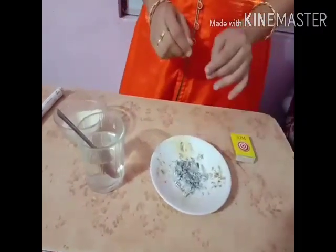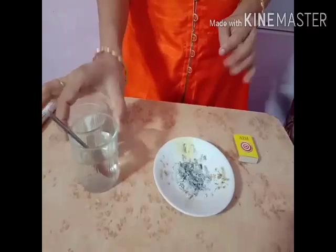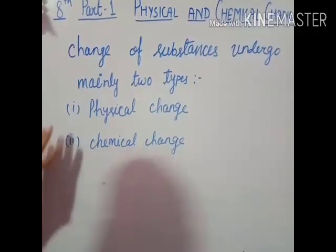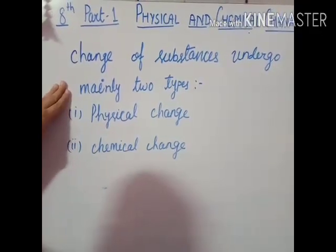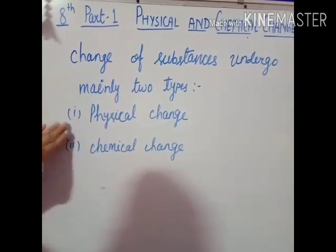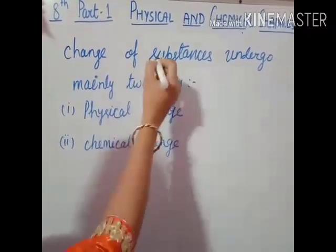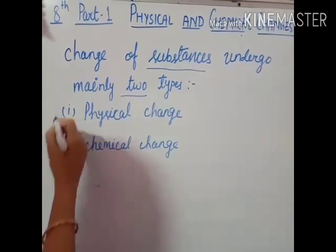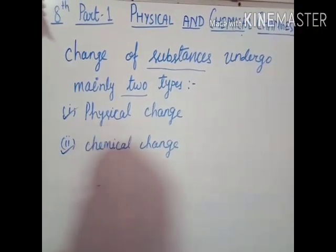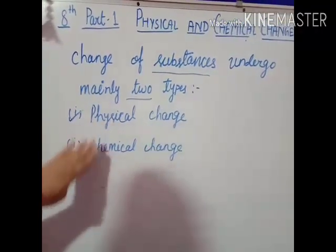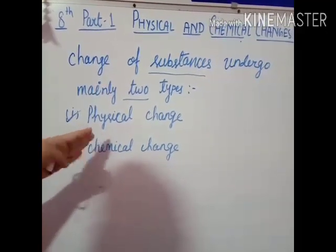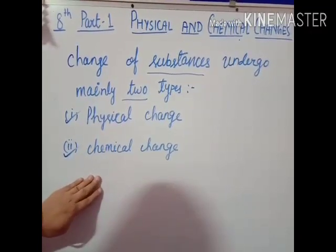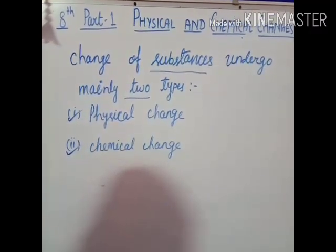One is called the chemical change and another one is called the physical change. From these two experiments, all changes that substances undergo are mainly of two types: one is the physical change and another one is the chemical change. Now we will read about the properties of each — how you can identify whether any change is a physical change or a chemical change.